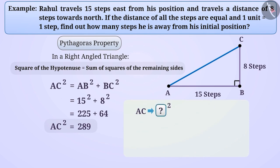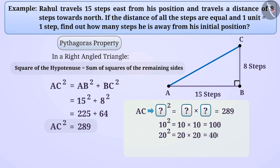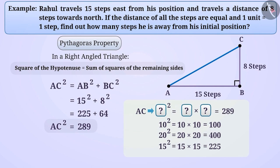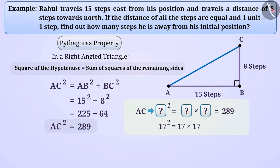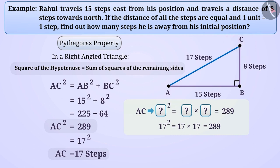To find the measure of AC, we need to find the number whose square is 289. We see that 10² = 100 and 20² = 400. Since 289 is between 100 and 400, the number whose square is 289 will be between 10 and 20. We find that 17² = 17 × 17 = 289. That is, AC² = 17², so the measure of hypotenuse AC is 17 steps. Therefore, Rahul is 17 steps away from his initial position.